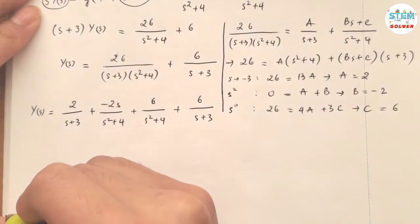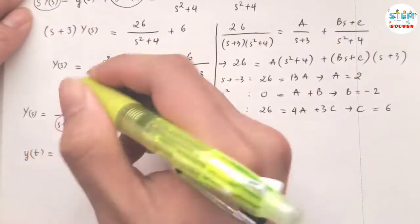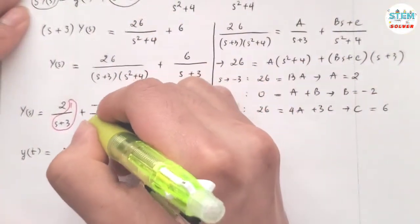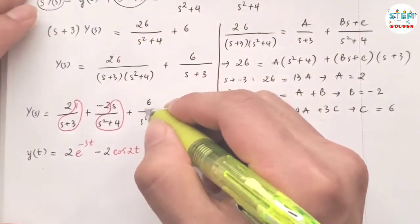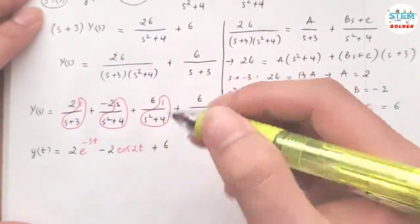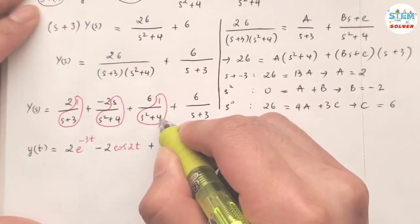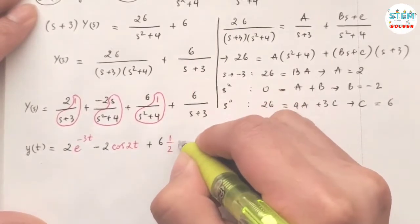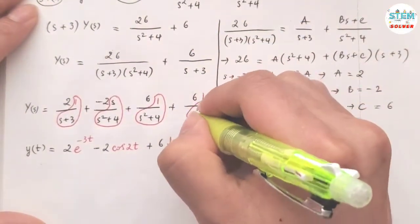Applying the inverse Laplace transform to both sides, on the left I get y(t). On the right: factor out 2 — the inverse Laplace of 1 over (s plus 3) is e to the negative 3t. Factor out negative 2 — the inverse Laplace of s over (s squared plus 4) is cosine 2t. For the 6 over (s squared plus 4) term, factor out 6 — the inverse Laplace of 1 over (s squared plus 4) equals one-half times sine 2t.